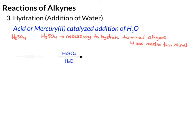Because this internal alkyne is symmetrical — we just have a methyl on each end — it doesn't matter which side we add the hydrogen to and which side we add the OH to. So we add H and OH across the pi bond: the hydrogen to one carbon, the OH to the other. We end up going from the alkyne to the alkene, still with the methyl groups but now with a hydrogen and an OH. This product has an alcohol bonded to an alkene, and this is called an enol.